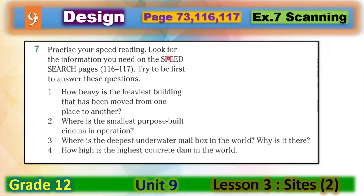Now let's move to Exercise 7: practice your speed reading. Look for the information you need on the speed search pages 116–117. Try to be first to answer these questions: How heavy is the heaviest building that has been moved from one place to another? Where is the smallest purpose-built cinema in operation? Where is the deepest underwater mailbox in the world and why is it there? How high is the highest concrete dam in the world? Take your time, find the answers on pages 116 and 117, and when you finish please play the video again to check your answers.